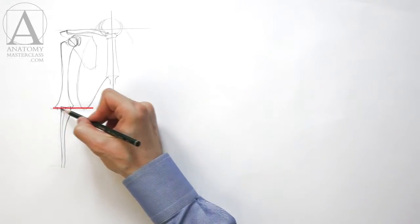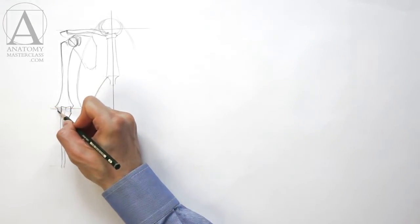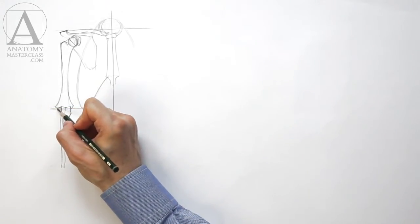You may notice that the elbow is located on the same level as the lower edge of the ribcage. Keep that in mind each time you draw a human figure.